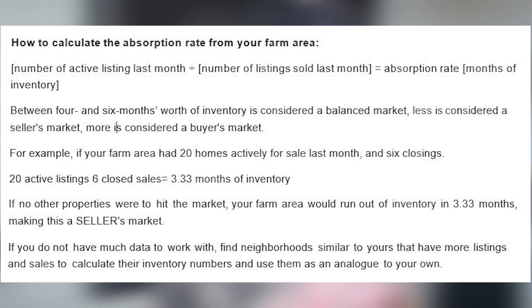Let me give you an example. If there are 20 active listings and six closed sales, that equals 3.33 months of inventory. Pretty easy to understand how to calculate that.